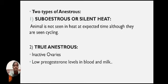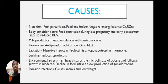Two types of anestrus: First, sub-estrus or silent heat — the animal is not seen in heat at the expected time, although they are seen cycling. Second, true anestrus — characterized by inactive ovaries and low progesterone levels in blood and milk.